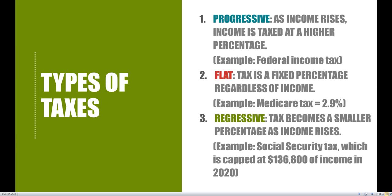We have four types to look at: progressive, flat, regressive, and lump sum. The first is a progressive tax. As income rises, income is taxed at a higher percentage. This is the type of tax we'd like to see in any developed economy, and it's the type of tax system we have here in the United States. The federal income tax that we pay every year is considered to be a progressive tax.